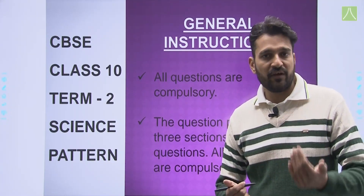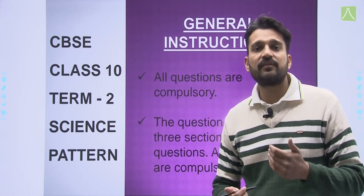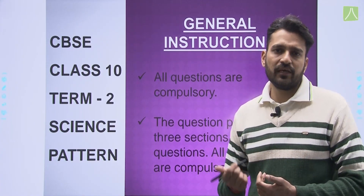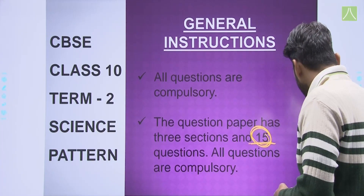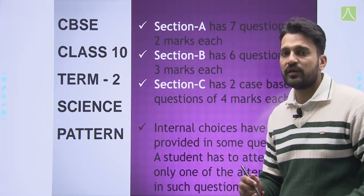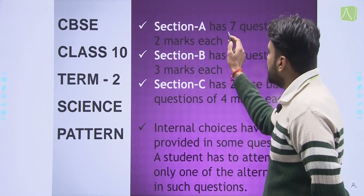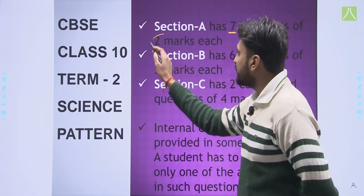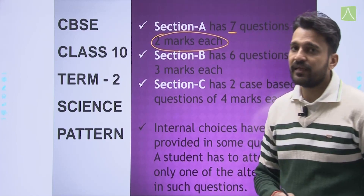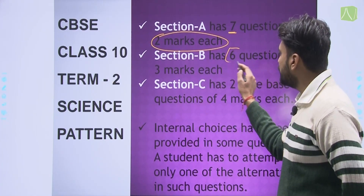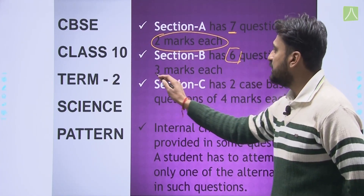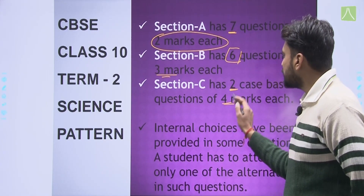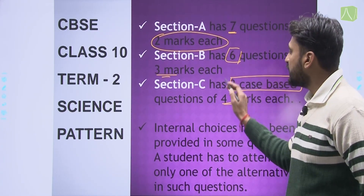What will be the level — how many easy type questions, how many difficult level, how many moderate questions — we will see that in the next slide. Out of the 15 questions, 7 questions will be of 2 marks each, which will come in Section A. Section B will have 6 questions of 3 marks each. Section C will have 4-mark questions — how many questions? 2 questions will come.